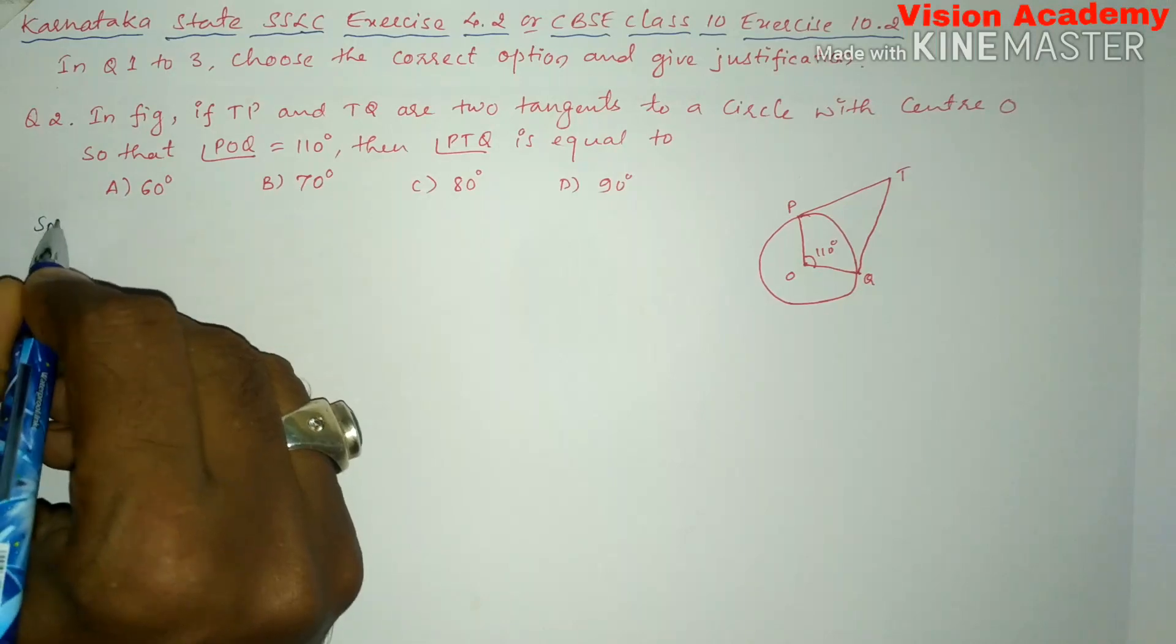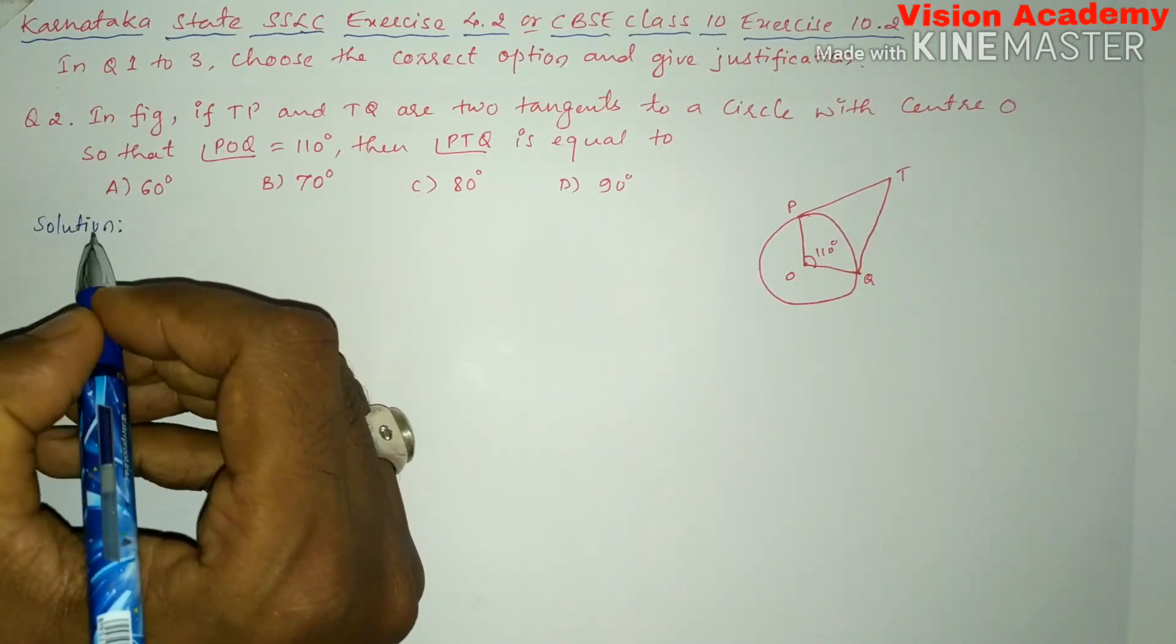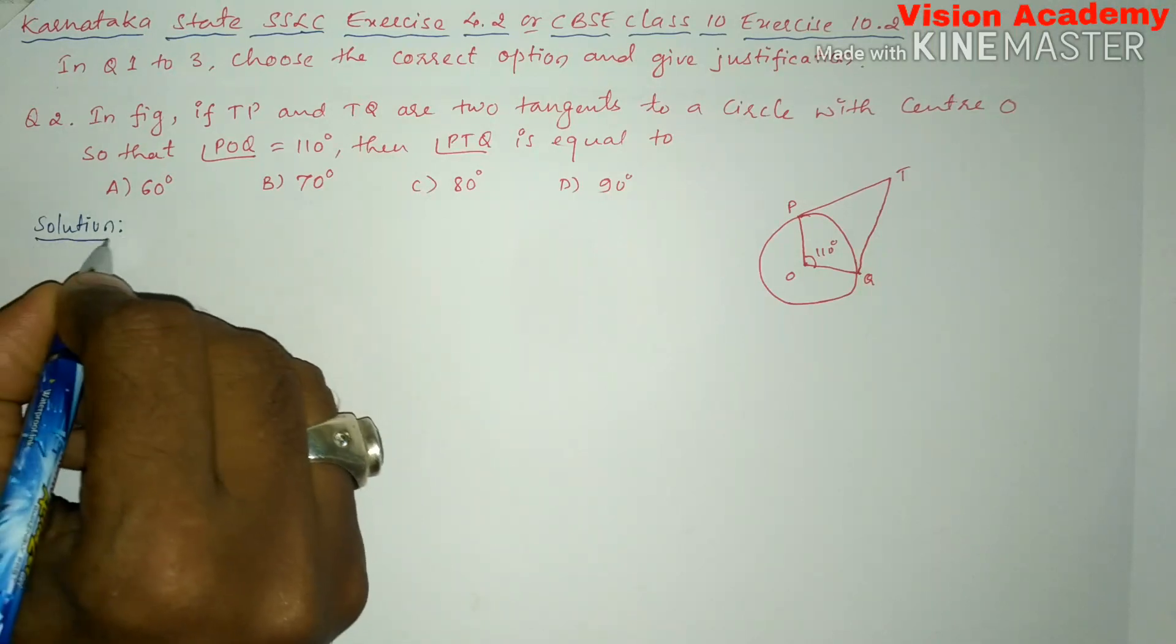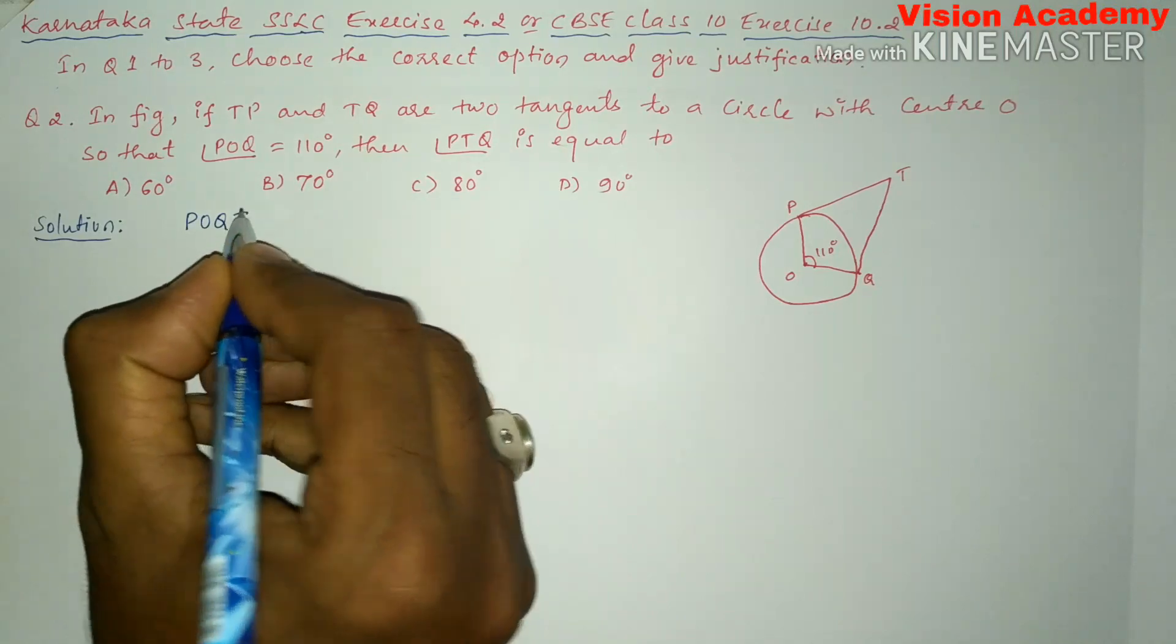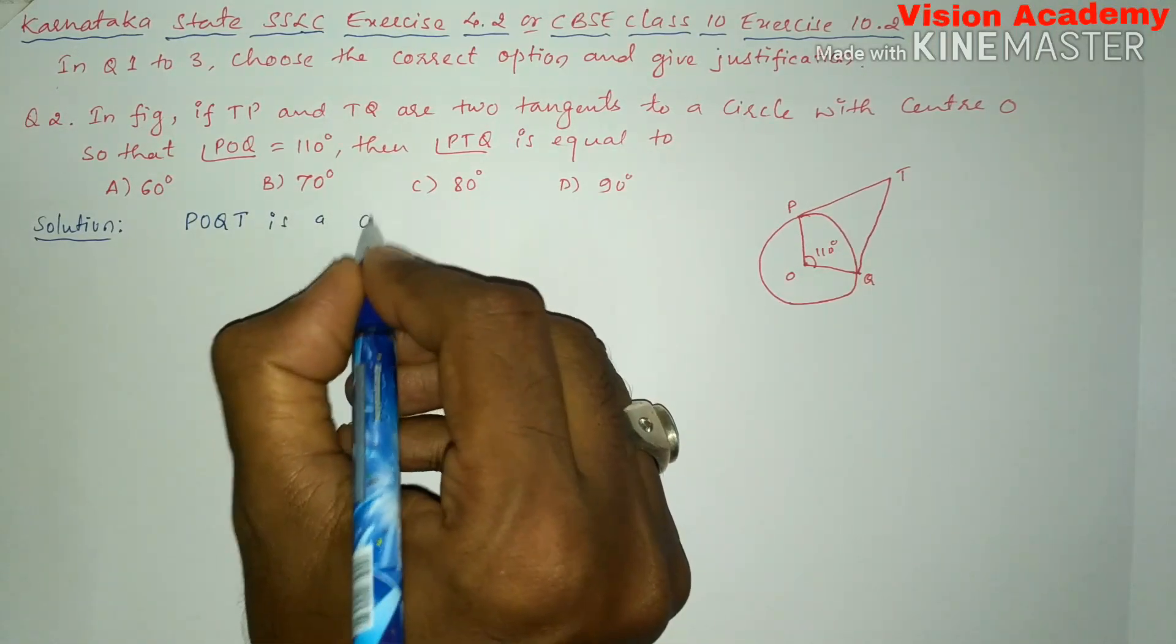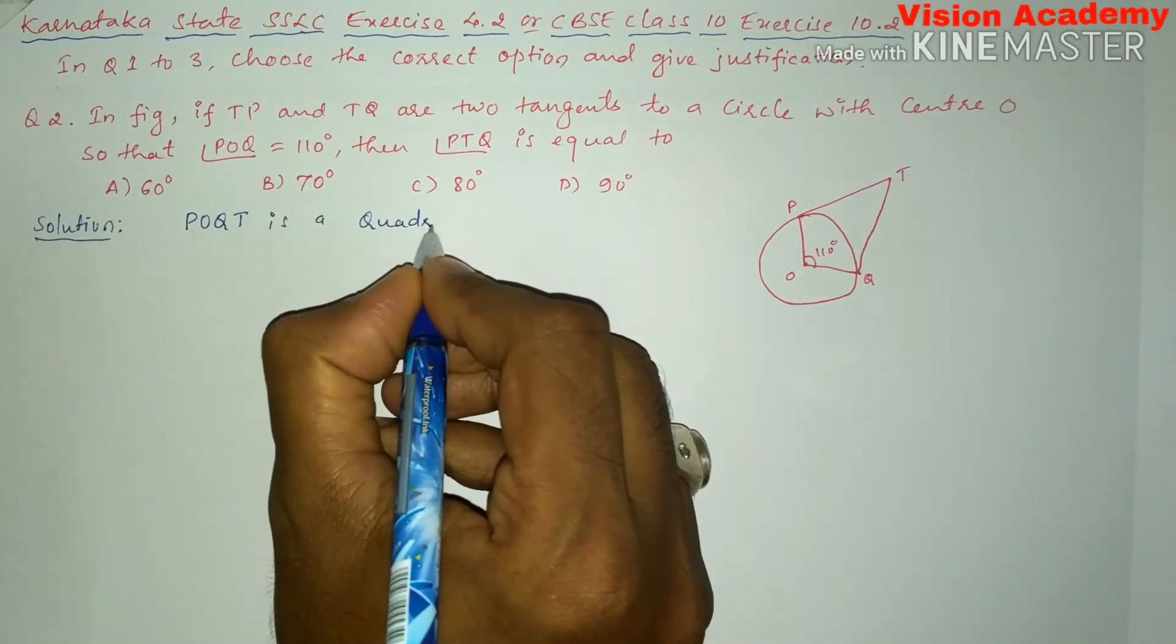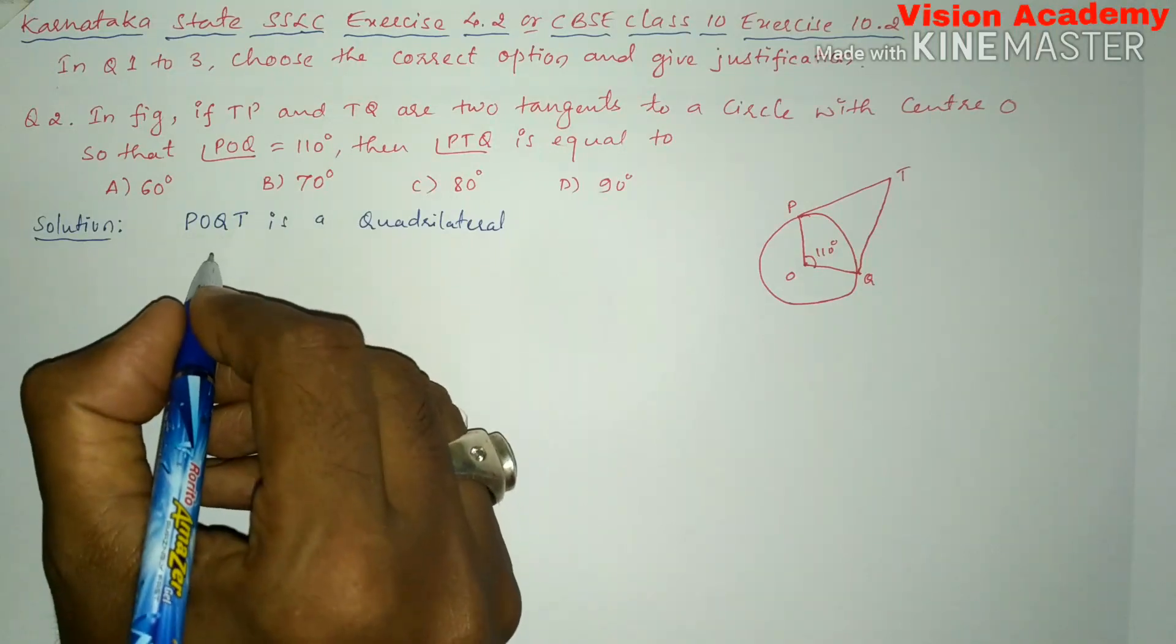Now let us write the solution for the given problem. Here we will write POQT is a quadrilateral. In a quadrilateral,